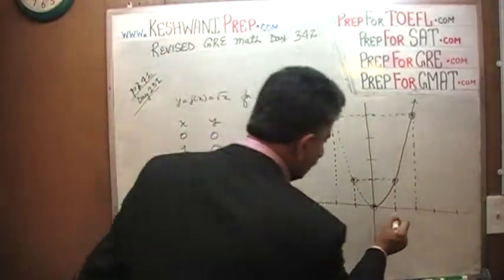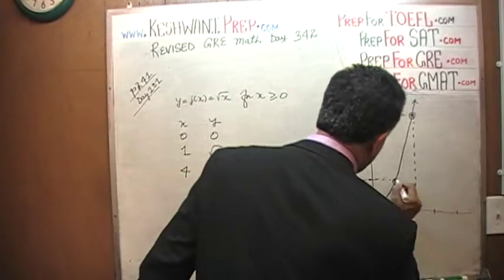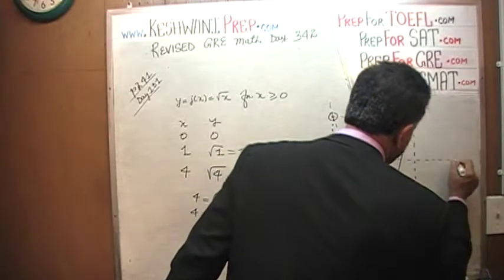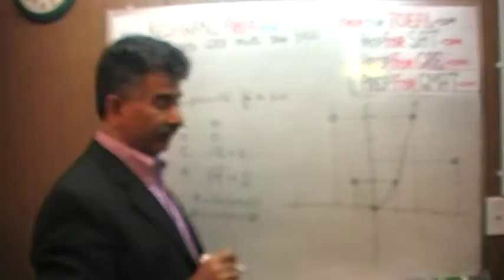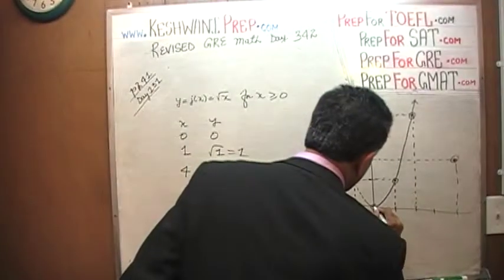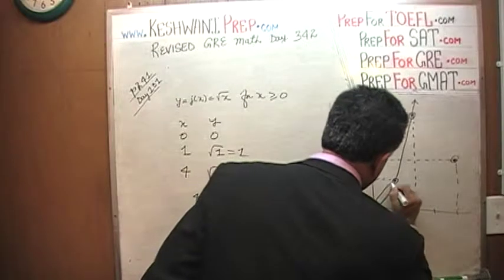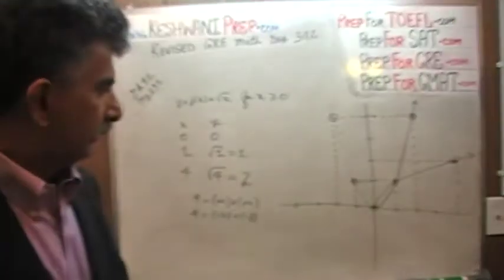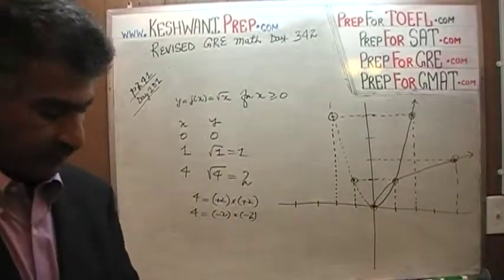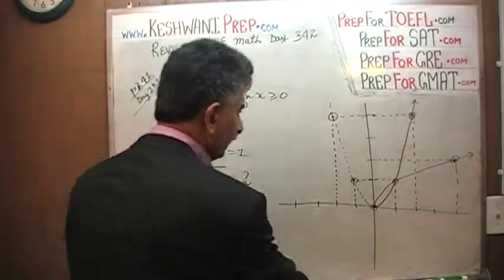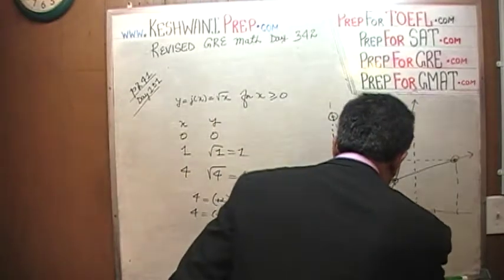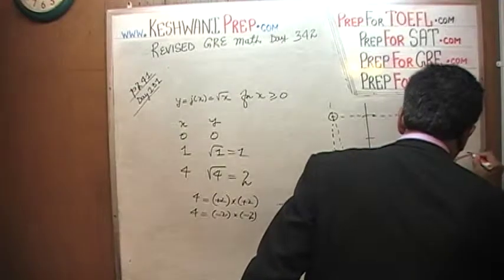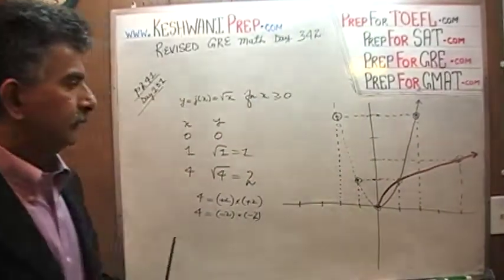So when x is 1, y is 1. And when x is 4, y is going to be 2. That is our graph for j of x. I am going to redraw it with a different color so that it is easier to see.